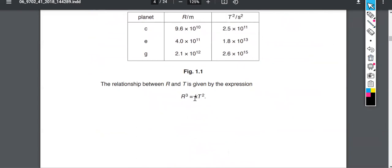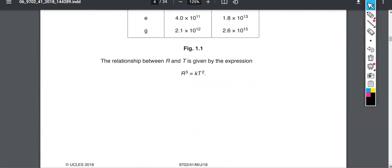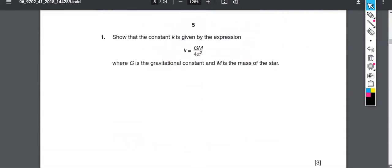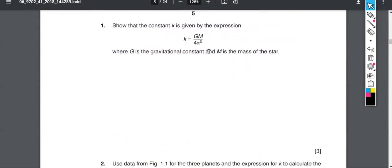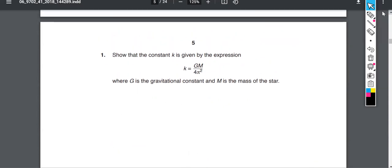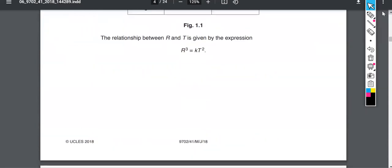So we got some orbital data there. And we're going to determine what this constant K is. They just sort of give you the relationship here on this page. And they ask you to show it right here. Show that K should be these numbers. GM over 4π squared. All right. So we'll do this again in short order here.